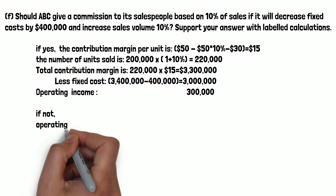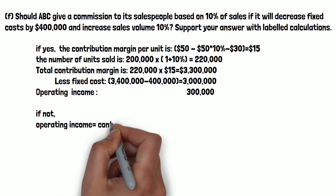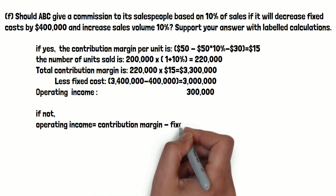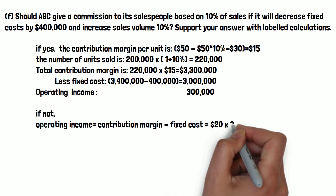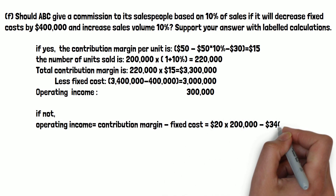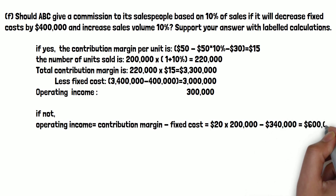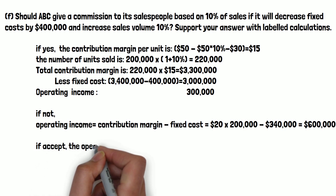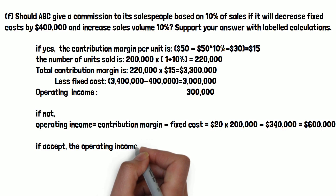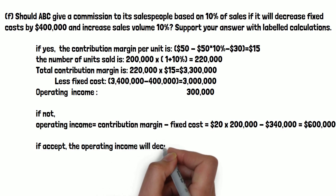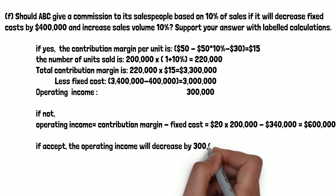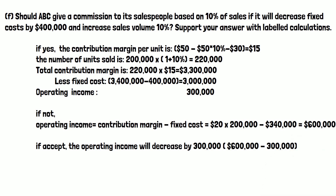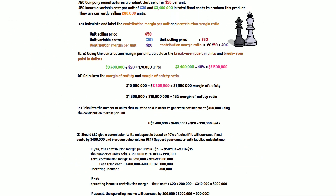If we do not accept this proposal, operating income equals contribution margin minus fixed costs: $20 per unit times 200,000 units is $4 million, minus fixed costs of $3.4 million, giving operating income of $600,000. If we accept the proposal, operating income is only $300,000 — lower by $300,000. Therefore, the proposal should be rejected.